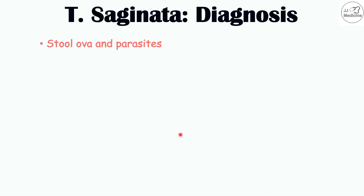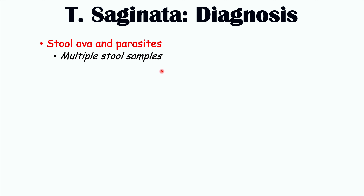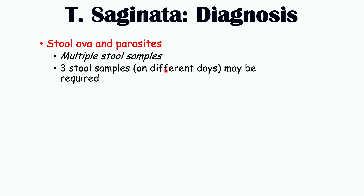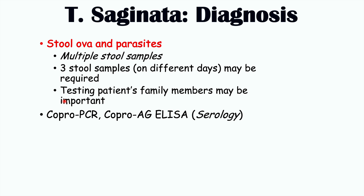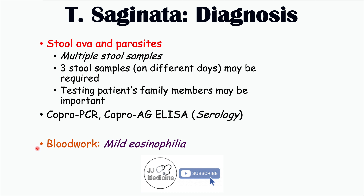Clinicians diagnose this tapeworm through stool ova and parasites testing — looking at the patient's stool for ova (eggs) and the tapeworms themselves. It requires multiple stool samples, usually at least two to three on different days, and it may be important to test other family members as well. Other lab tests include copro-PCR, copro-antigen ELISA, or serology. A CBC may reveal mild eosinophilia, as eosinophils are the white blood cells that attack parasites.